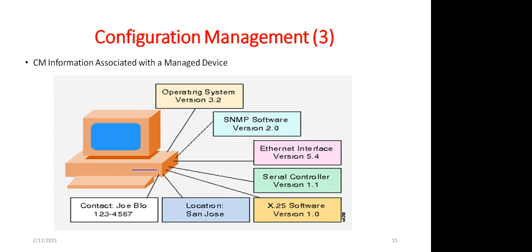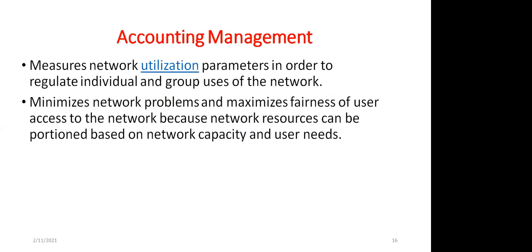Accounting Management measures network utilization parameters to regulate individual and group users. It tracks how much of a resource — whether system, link, or other — is being used, so it can be billed. Records help minimize problems, maximize fairness, and apply appropriate usage policies.